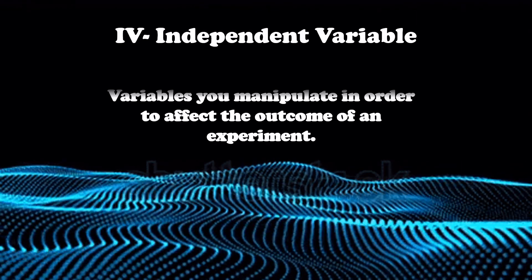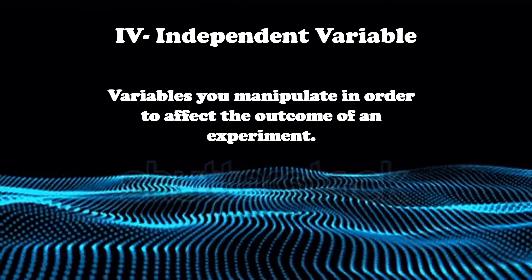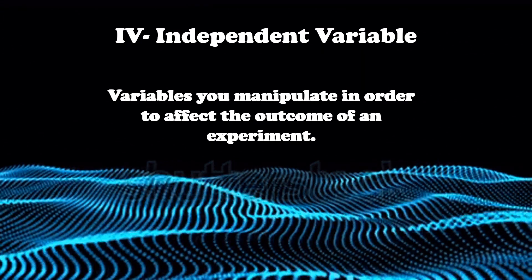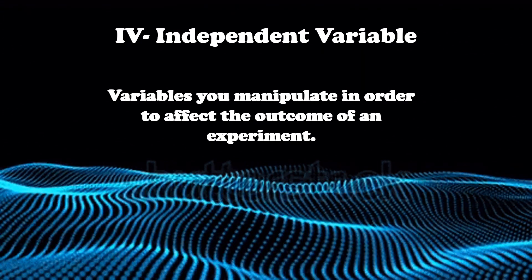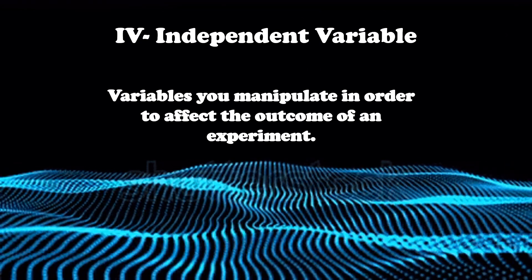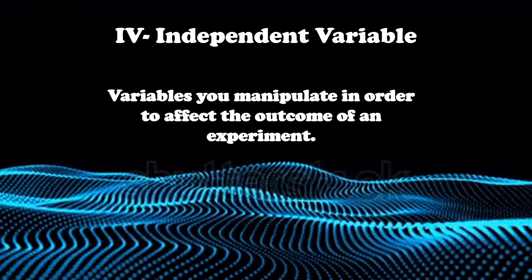Independent variables are variables you manipulate in order to affect the outcome of an experiment. Now, let's compare experimenting in making a movie. In making a movie, there will always be the main character. Independent variable can be considered as the main character in the experiment.